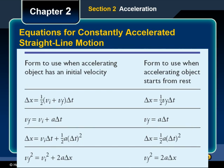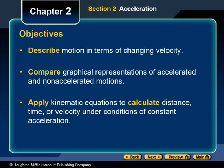With the four equations presented in this section, it is possible to solve any problem involving one-dimensional motion with uniform acceleration. The equations used most often are listed in figure 2.6 on the screen here. The first column gives the equations in standard form. For an object initially at rest — meaning initial velocity equals zero — using that value in the equations results in the simplified forms shown in the second column. Referring back to the sample problems in this chapter will guide you through using these equations to solve many problems. At this point, you should be able to describe motion in terms of changing velocity, compare graphical representations of accelerated and non-accelerated motions, and apply kinematic equations to calculate distance, time, or velocity under conditions of constant acceleration.